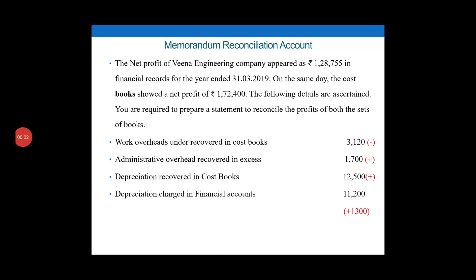Dear students, the net profit of Veena Engineering Company appeared as 1,28,755 in financial records for the year ended 31 March 2019. On the same day, the cost book showed a net profit of 1,72,400. The following details are ascertained. You are required to prepare the statement to reconcile the profit of both sets of books.